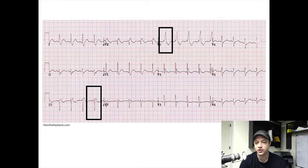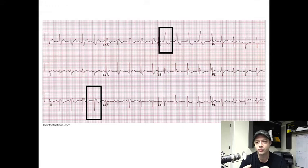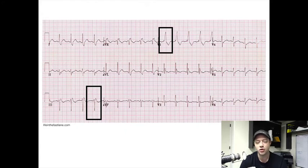As far as the fascicular blocks are concerned, that's part of the criteria for a bifascicular block. You see there are really small R waves in these QRS complexes and some rather large S waves, but they're not as proportionate as we want them to be. So we have this small R wave, a left axis deviation, a right bundle branch block — and that is what leads to a bifascicular block.